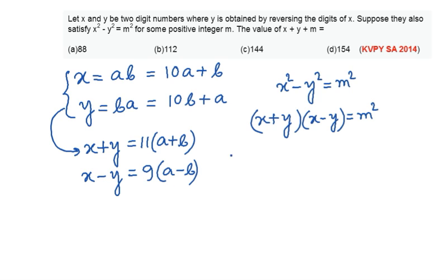So on substituting the values here, we can see that this is coming out to be 11(a + b) × 9(a - b) = m².